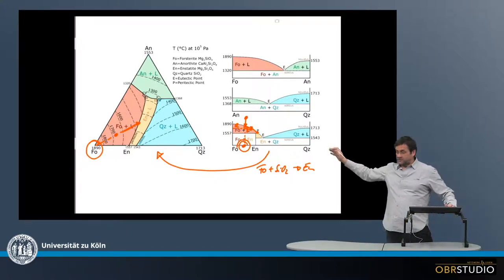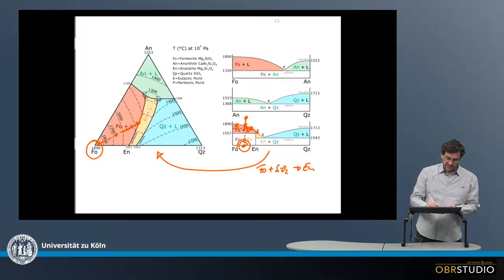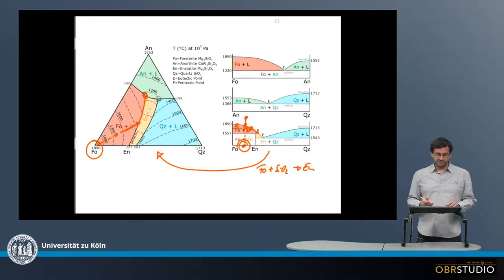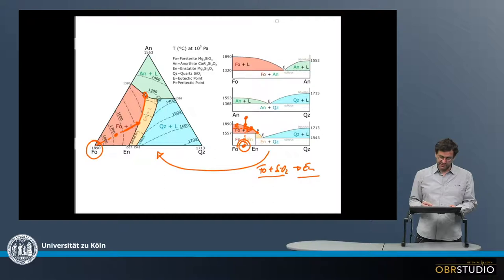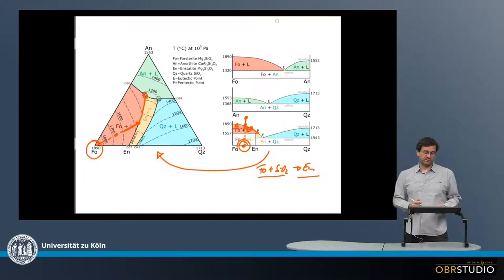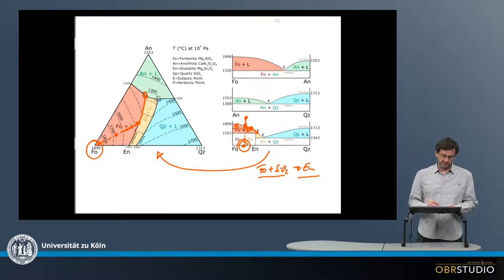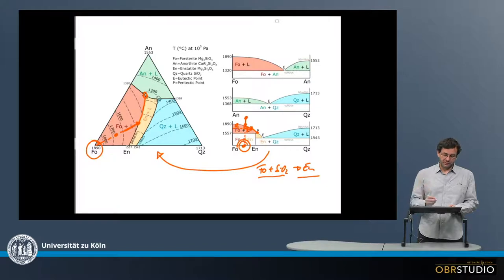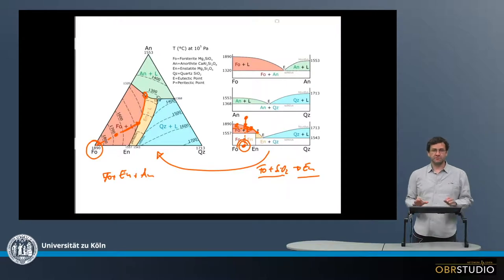This is the same as what's happening in the ternary diagram. The melt will develop along this peritectic line down to point P. At this peritectic point P, there will still be the reaction forsterite plus SiO₂ to enstatite, but this will then be accompanied by anorthite. So: forsterite plus melt to enstatite, with more enstatite forming. Some forsterite is consumed, but it will be accompanied by anorthite. This will again happen as long as there is melt. There will be no reaction further down to the eutectic point, and the final composition will be forsterite plus enstatite plus anorthite.